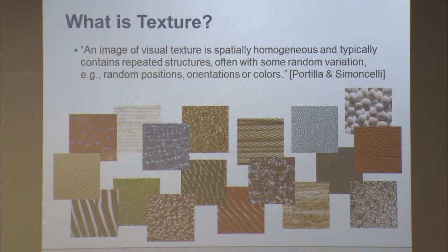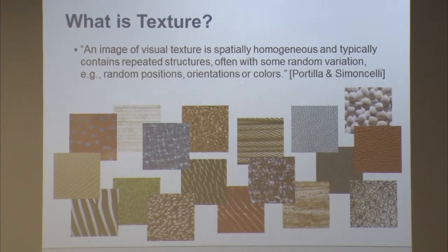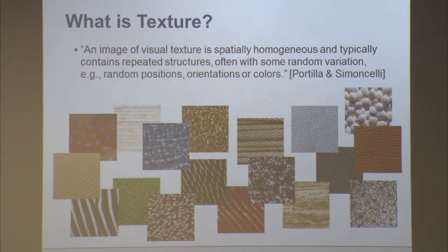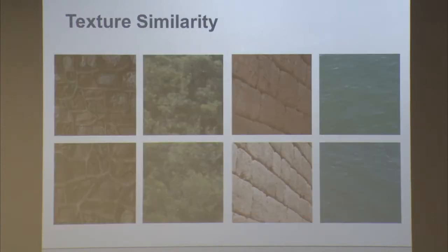What is texture? Here is a loose definition borrowed from Portilla and Simoncelli: a locally homogeneous image that typically contains repeated structures, often with some random variation in positions, orientations, or colors. The main problem I've worked on is texture similarity, which is difficult in itself, but I also want to start thinking about material properties.